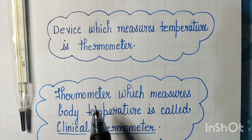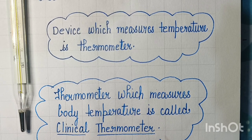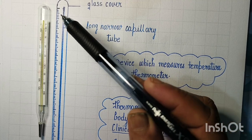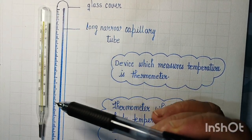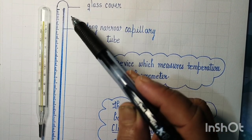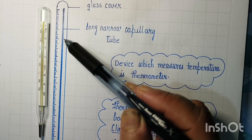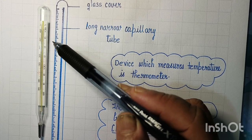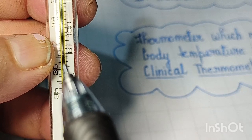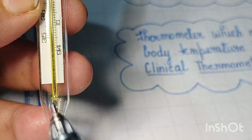A thermometer which measures body temperature is called specifically a clinical thermometer. Let us see the construction of a clinical thermometer. A clinical thermometer has a long glass tube, and inside that long glass tube there is a long narrow capillary, represented by the blue line in the diagram, which is connected with a bulb.